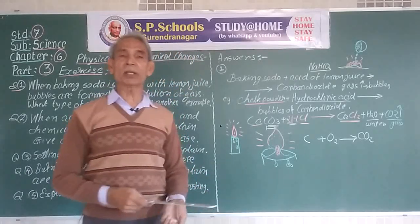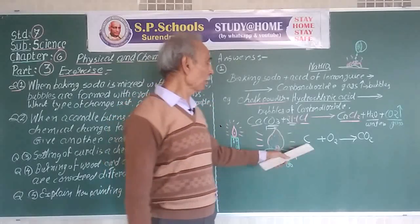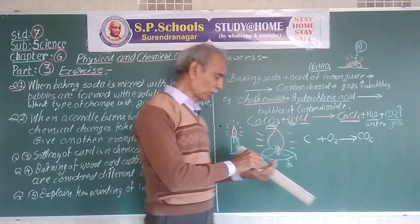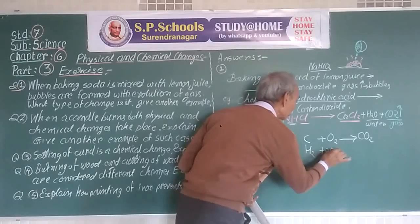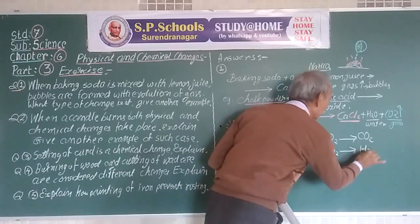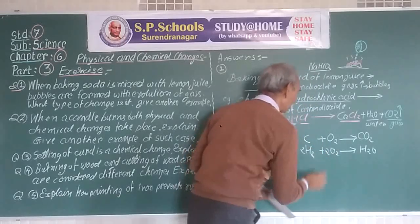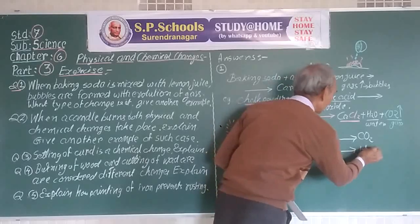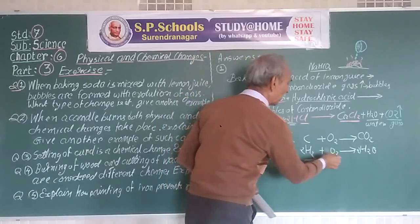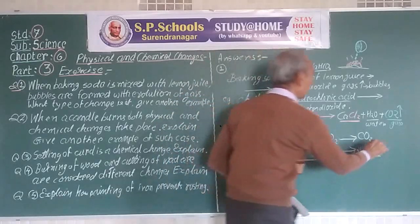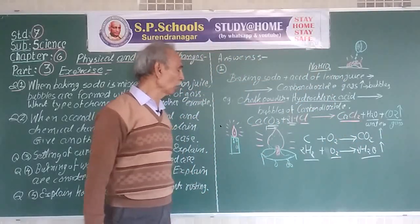Wax is nothing but a compound of carbon and hydrogen — it is called a hydrocarbon. Carbon on burning forms carbon dioxide, and hydrogen on burning forms water vapor. Both carbon dioxide gas and water vapor go out.